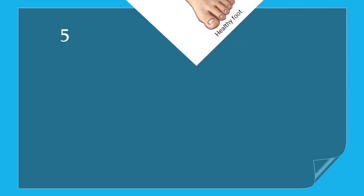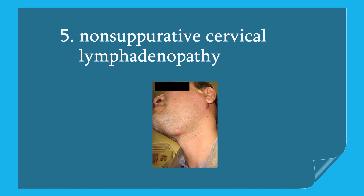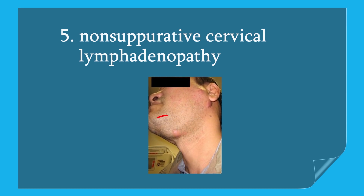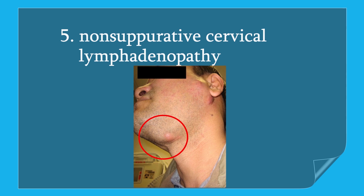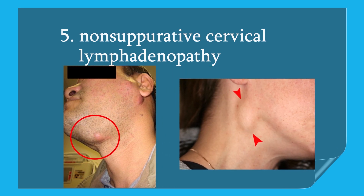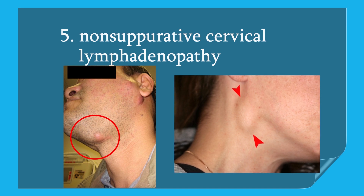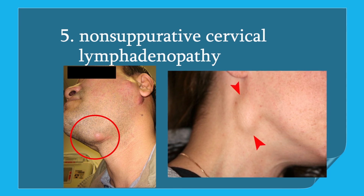The last symptom is non-suppurative cervical lymphadenopathy. Adenopathy is any disease or inflammation that involves glandular tissue. Lymphadenopathy occurs in the lymph nodes, and cervical lymphadenopathy refers to lymphadenopathy of the lymph nodes in the neck. Non-suppurative means there is no pus formation.